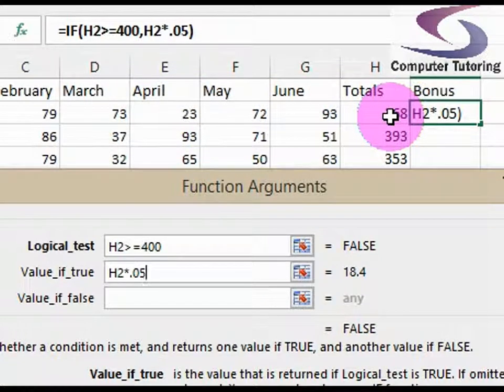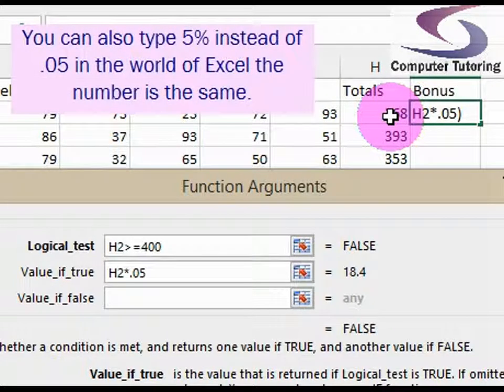So using the 5% as a decimal. Basically, 1 is 100, .1 is 10, .05 is 5. So there we go,